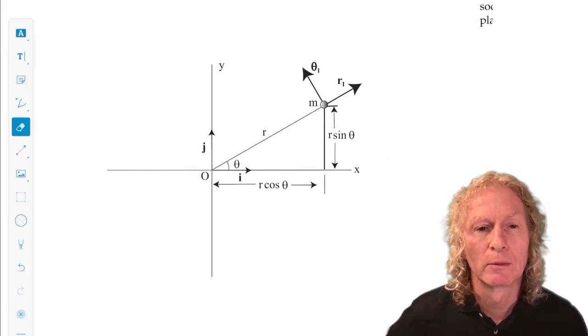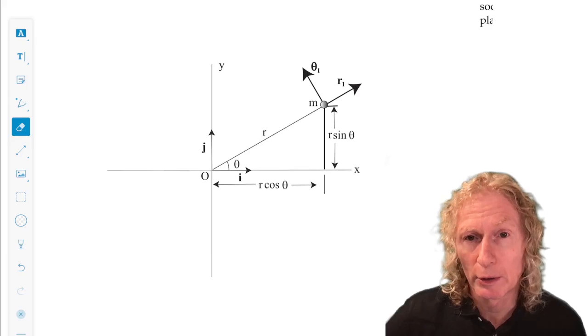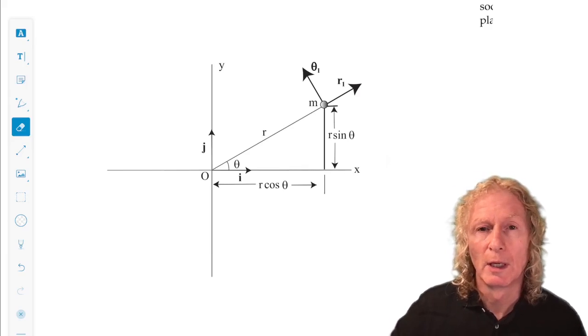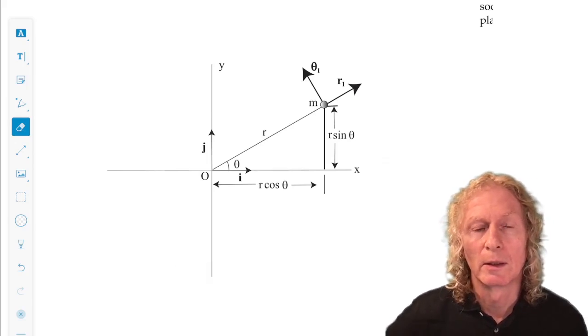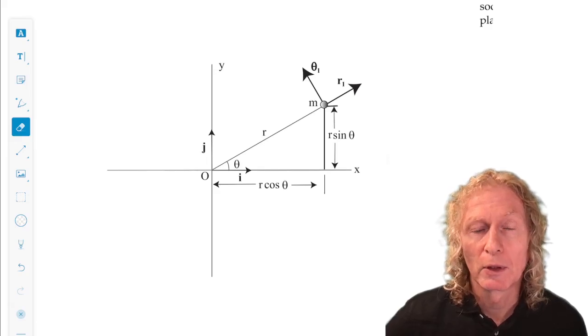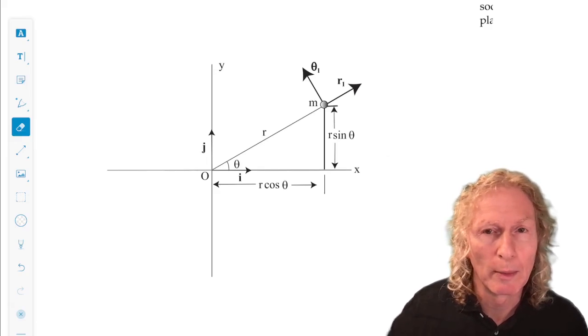Remember in the last lecture we said that a particle of constant mass m moving under the action of a central force as defined in the last lecture must lie in a plane because of angular momentum conservation.